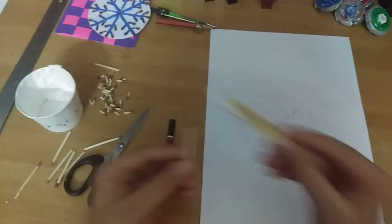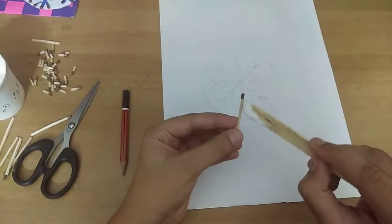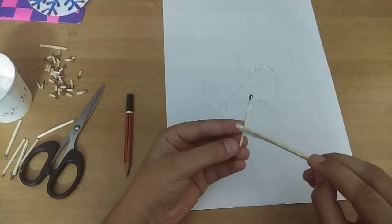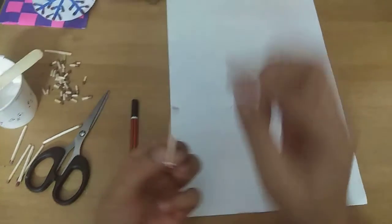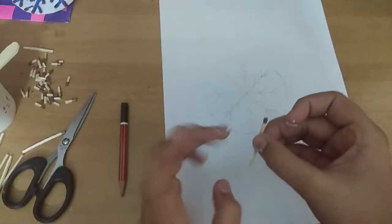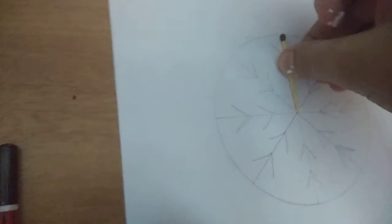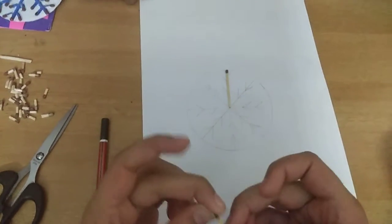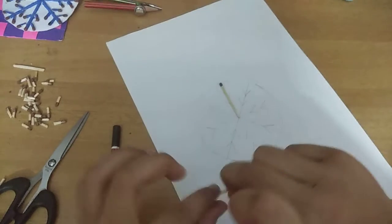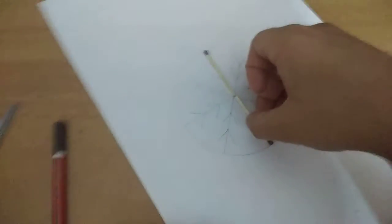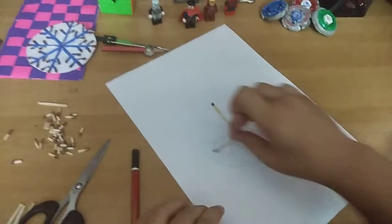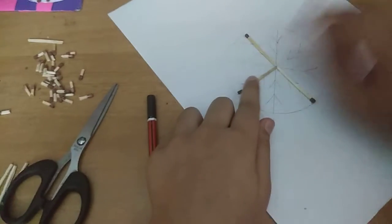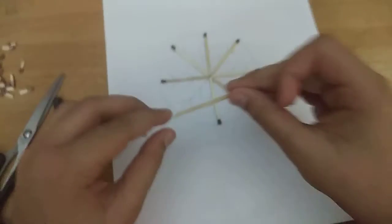After that you need to take the matchstick and just apply a bit of glue. Okay, now it's ready. Now just stick on this, on the line which you have drawn. So now on this, like this we need to keep, and one more like this, a plus sign, just a plus.